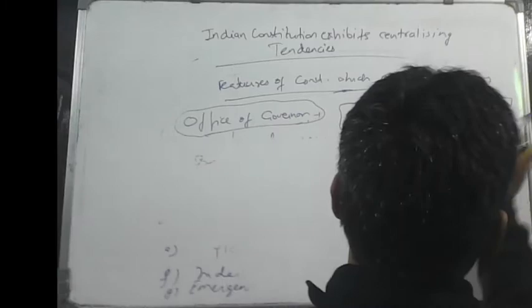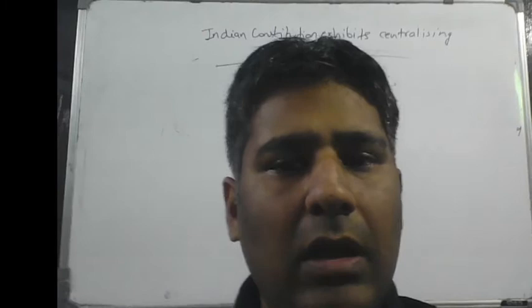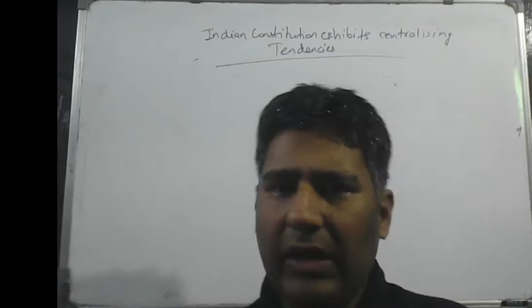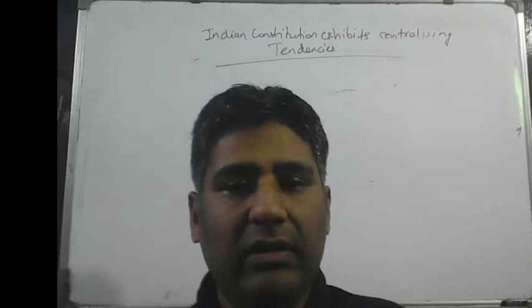So you can see the centralizing feature in our Constitution. The question specifically asks about this. You can also mention amendment — amendment of the Constitution lies with the center only. Plus the residuary powers, meaning those subjects which are not mentioned in any of the list also lie with the center.